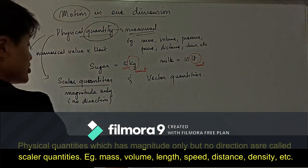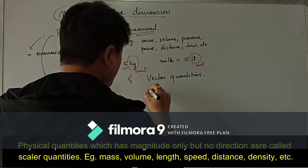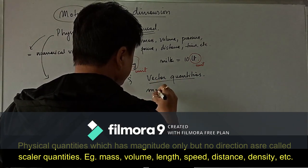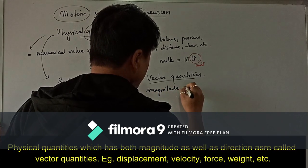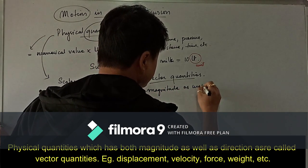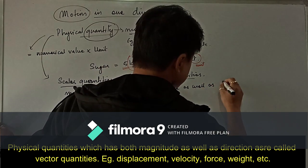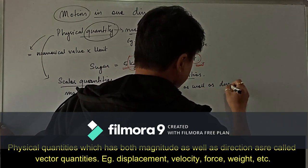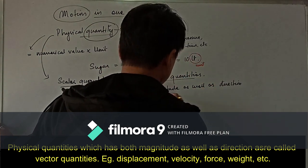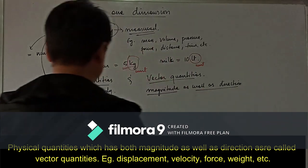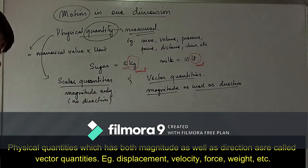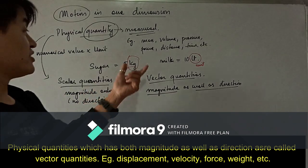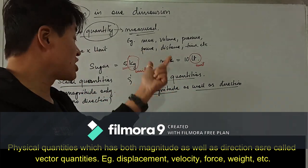Vector quantities are those quantities which have both magnitude as well as direction. Scalar quantities have magnitude only, whereas vector quantities have both magnitude and direction.